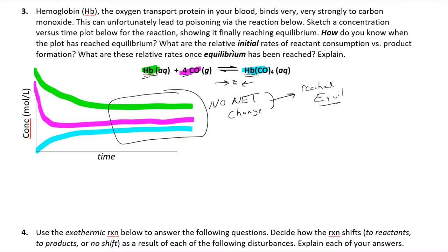For the initial relative rates, the stoichiometry is 1 hemoglobin to 4 CO to 1 complex. So the rates would be: hemoglobin −1, carbon monoxide −4 (used up four times faster), and the complex +1 (being produced). That tells you the relative rates of consumption and formation. You were given no numbers, but you're just approximating based on stoichiometry.